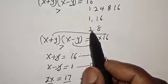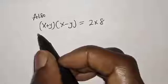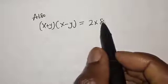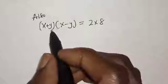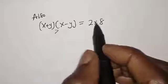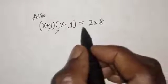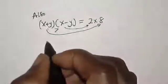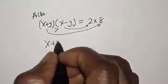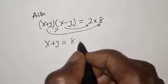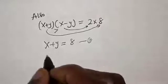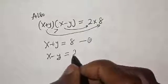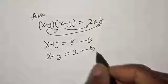Let's check for the factor pair 2 and 8. We have (x + y)(x − y) equal to 2 multiplied by 8. Remember, (x + y) is greater than (x − y), and since 8 is greater than 2, we assign: x + y = 8 — equation 1 — and x − y = 2 — equation 2.